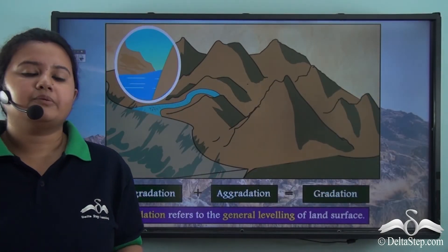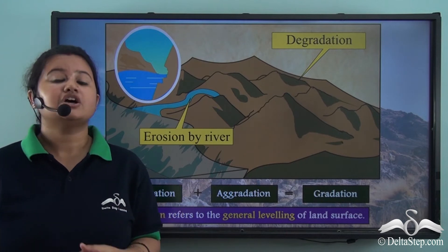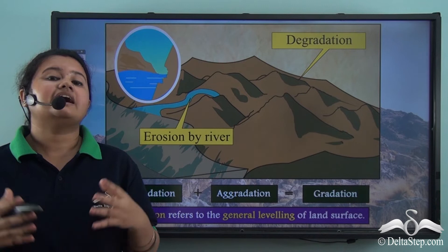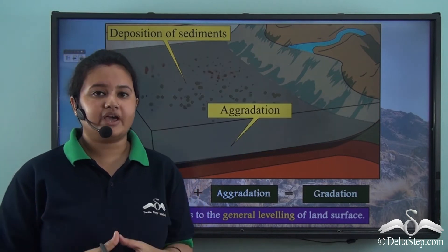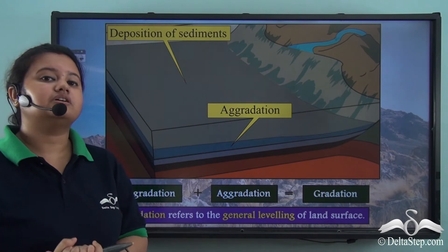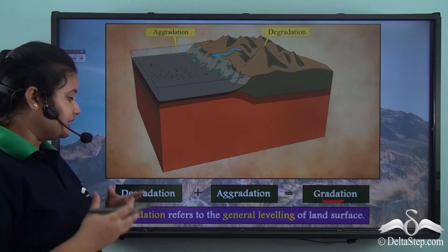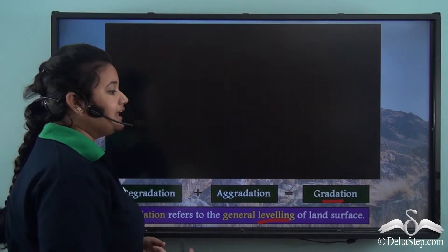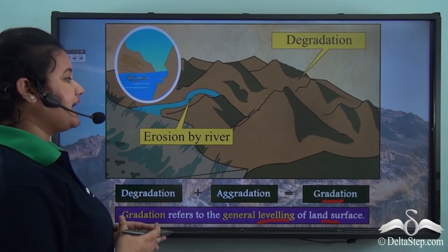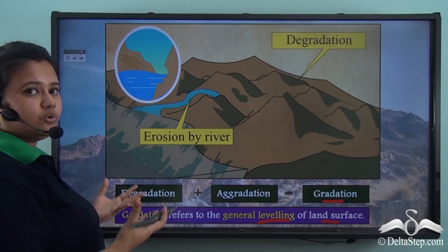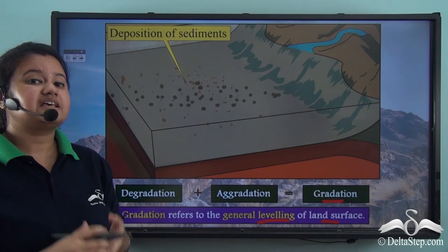We read about two processes: degradation and aggradation. Degradation causes the height of the land surface to decrease, while aggradation causes the height of the land surface to increase. These two processes act together and lead to general levelling of the Earth's surface, and they are together known as gradation. Gradation refers to the general levelling of the land surface — degradation decreases the height of mountains and aggradation increases the height of riverbeds or lowlands, resulting in a general levelling.